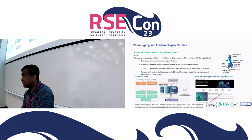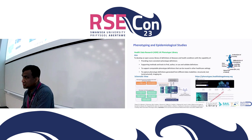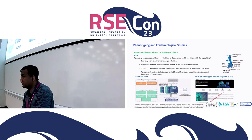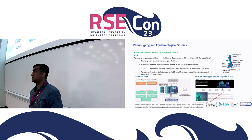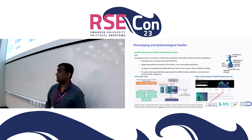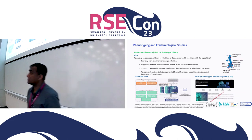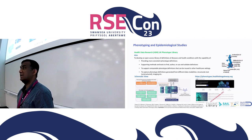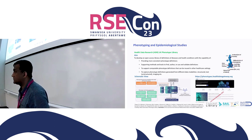Following these desiderata and discussions with researchers, the aim of the HDR UK phenotype library was to develop an open access library of definitions of diseases and health conditions, providing more consistent definitions and supporting tools and methods to find, author, reuse, and validate existing definitions, as well as supporting computable phenotype definitions. The library aims to support not only clinical code-based phenotype definitions from structured data, but also NLP-based and image-based phenotype definitions. Currently, the library is mainly based on structured data, but we are looking to collaborate on NLP-based and image-based phenotypes.